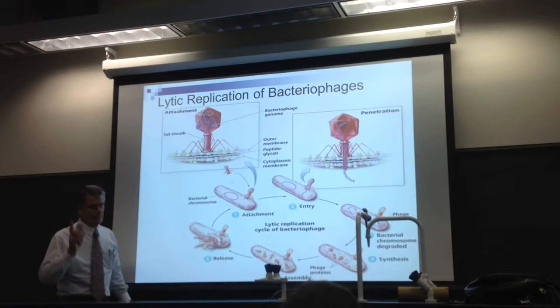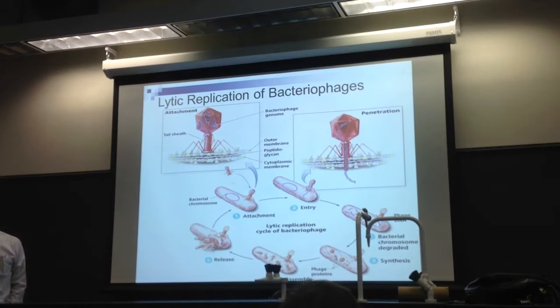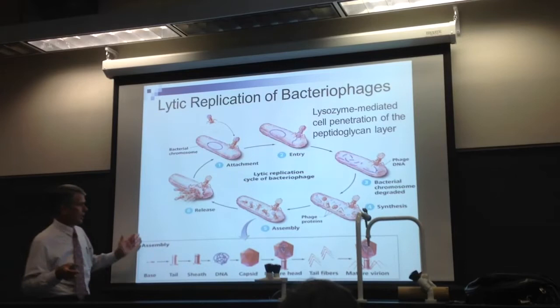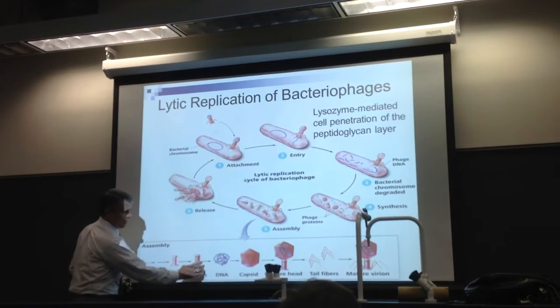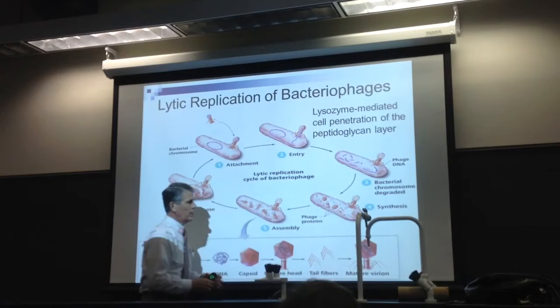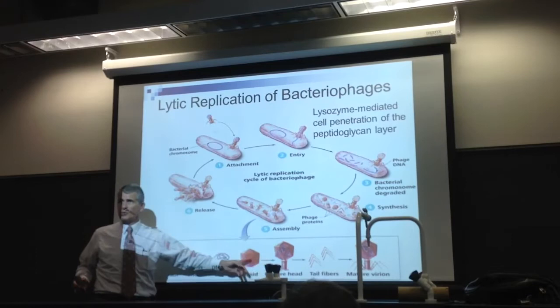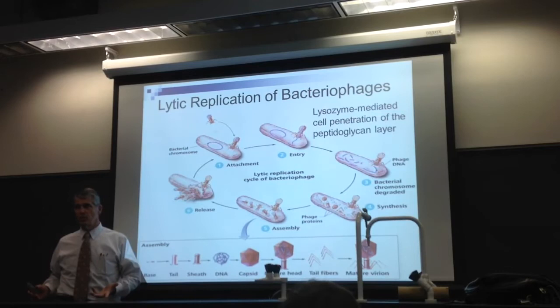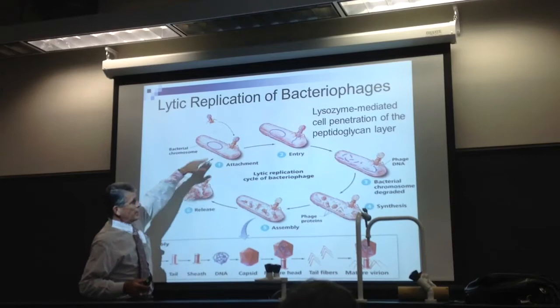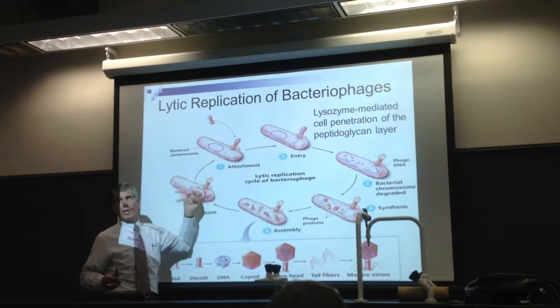This is the lytic cycle. It just gives you a little more detail — the base, the tail, the sheath, the DNA, the capsid, the head, the fibers — showing some of the complexity. There are over 70 different proteins that have to be made to make this bacteriophage. It's not a trivial thing. It gets in, makes these phage particles, assembles them, and then it lyses or ruptures itself.